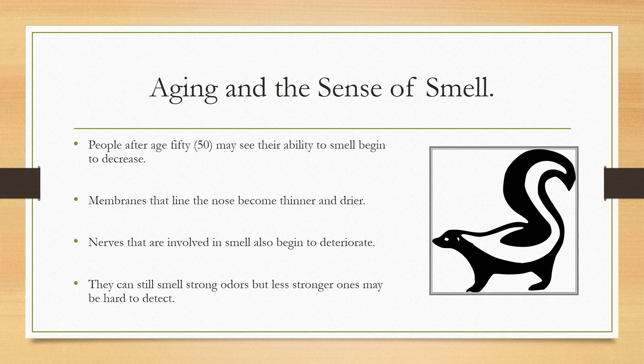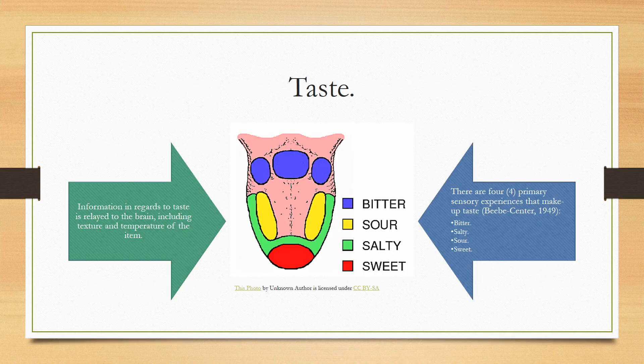The combination of taste, smell, and tactile sensations is known as flavor. Information about taste is relayed to the brain including the texture and temperature of items — hot and cold. There are four primary sensory experiences that make up taste: bitter, salty, sour, and sweet. People detect flavors through their taste buds; for example, sweet is detected at the tip of the tongue, with other tastes located toward the back of the throat.